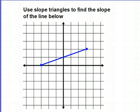Let's go on and look at some other examples. This is very easy. We've already looked at examples like this in class. We're going to use a slope triangle to find the slope of the line below.